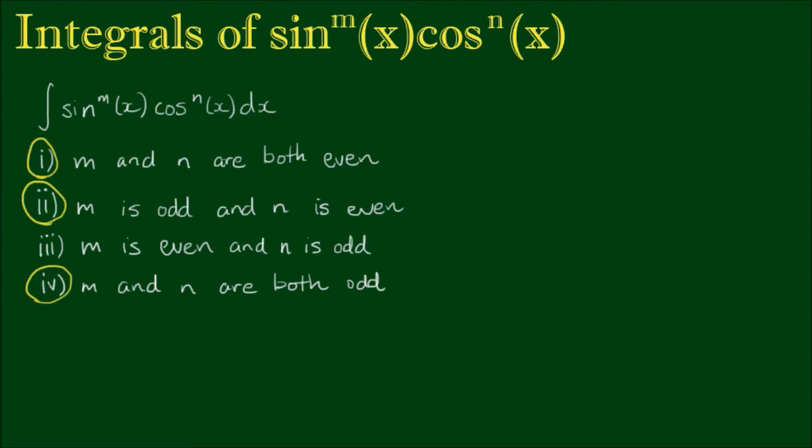Where both powers are odd. An example that I'm going to use is the integral of sine to the third power by cosine to the third power. And when we have two odd powers, the case is actually quite straightforward compared to when we have even powers.